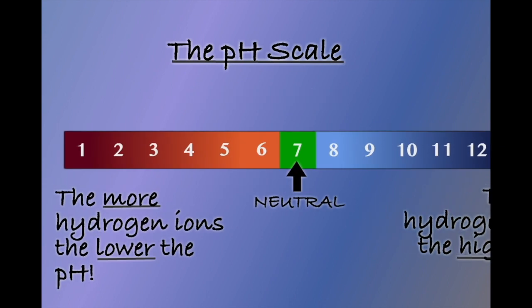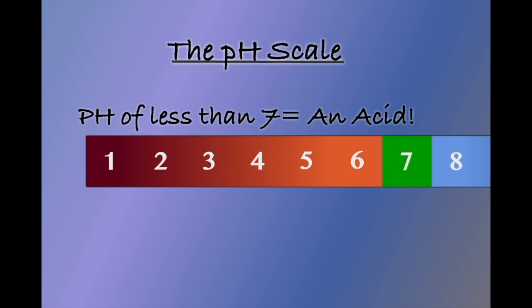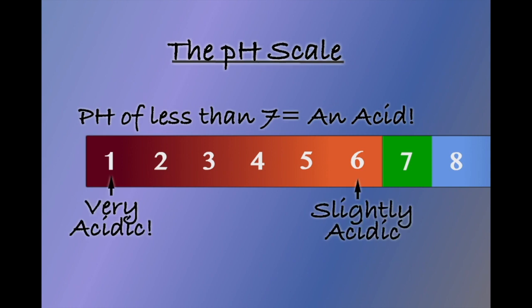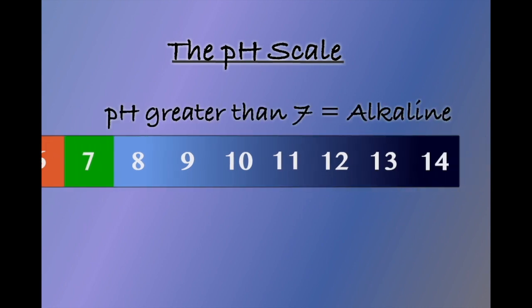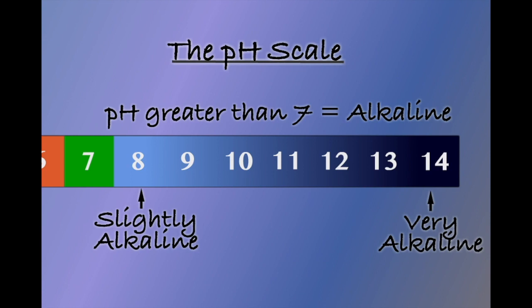A solution with a pH of less than 7 is considered to be acidic, with the concentration of hydrogen ions and therefore the acidity increasing as you move further down the scale. A solution with a pH of greater than 7 is considered to be alkalotic, with the concentration of hydrogen ions decreasing as you move up the scale.